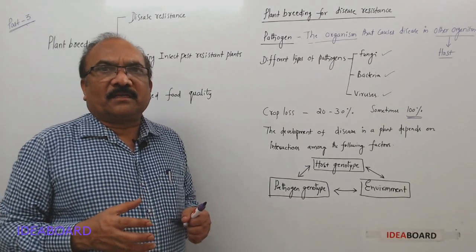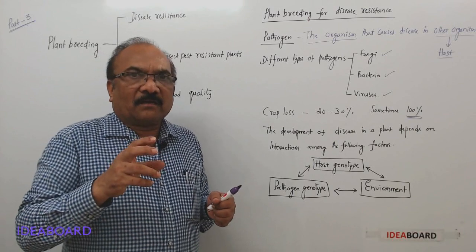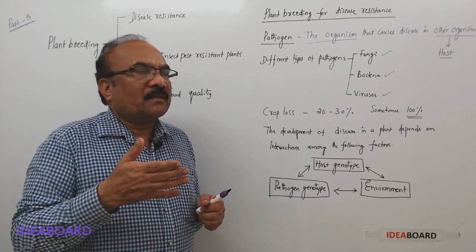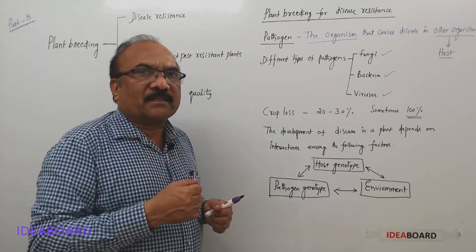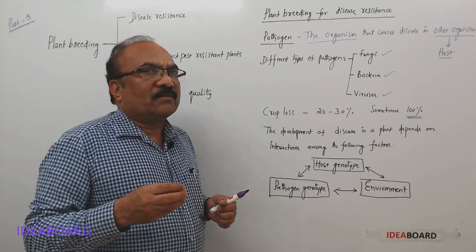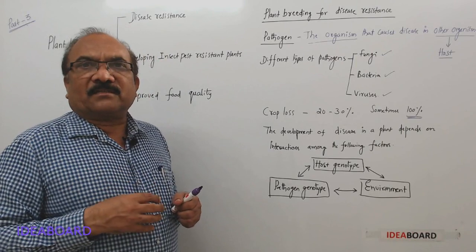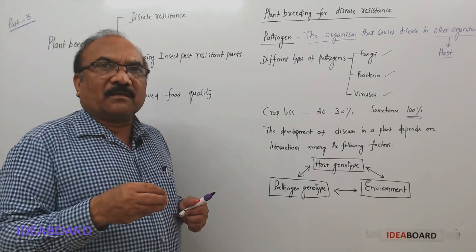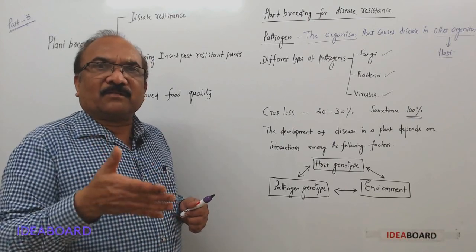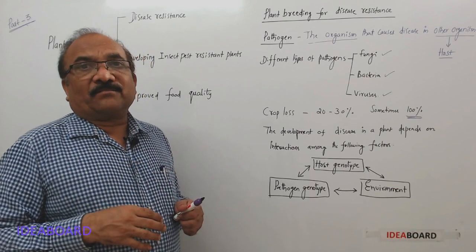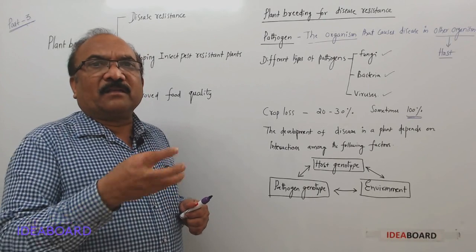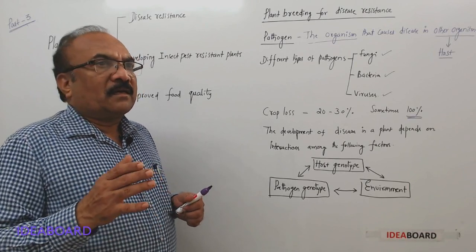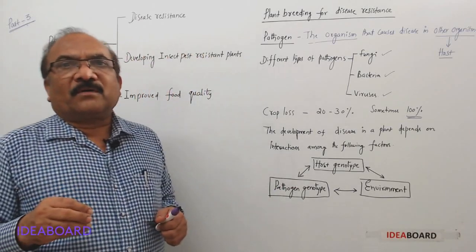Whenever we find some symptoms in the field, we go for pesticides — fungicides, bactericides, and viricides. But when using these chemicals, they may cause side effects. They may pollute the soil, the water, and even our body, as residues remain in the products we eat. That is why the best method is to develop disease resistant varieties. As the saying goes, prevention is better than cure.